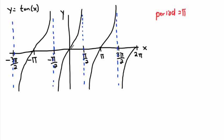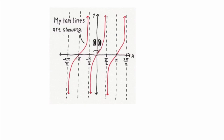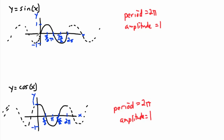For tangent, amplitude doesn't make sense to define because the graph goes up to infinity. We can say it has a period but not an amplitude. And here's another bad joke: 'My tan lines are showing.' Knowing how to graph sine and cosine by hand is really important because later, when you look at different transformations, you can know exactly what to do by starting with these basic graphs.